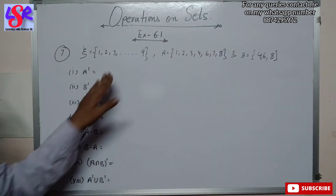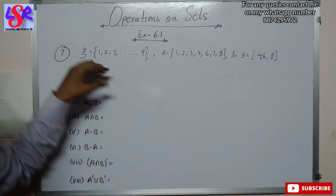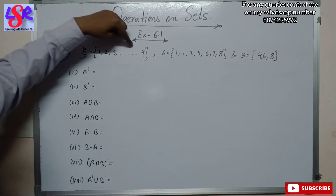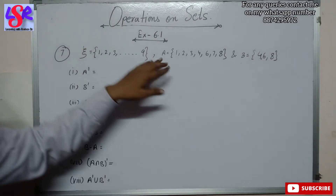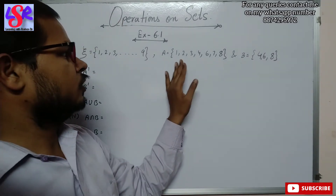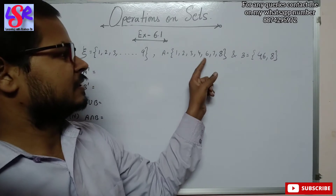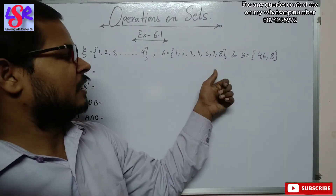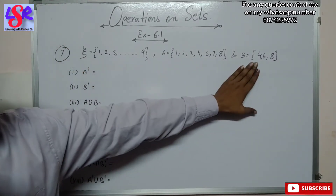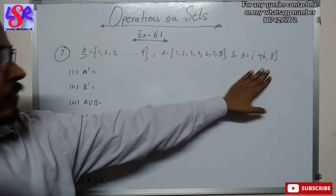In question number 7 we are having the universal set from number 1 to 9. In set A we are having numbers 1, 2, 3, 4 — 5 is not there — 6, 7, 8 — and 9 is also not there. Then in B we are having 4, 6 and 8.